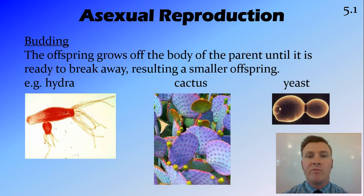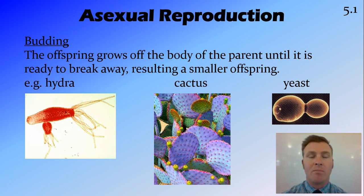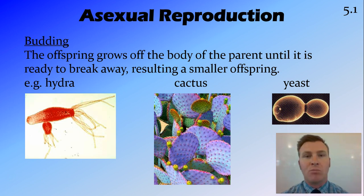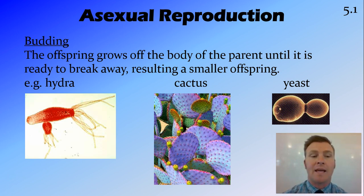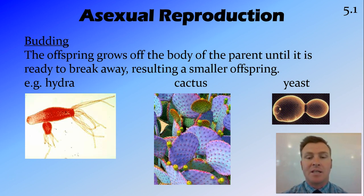Another form of asexual reproduction is budding. Budding occurs when a smaller offspring grows off the body of the parent until it's ready to break away, resulting in a smaller offspring. This can happen in simple organisms like yeast or hydra, which is a form of aquatic animal, but it can also happen in plants such as the cactus.